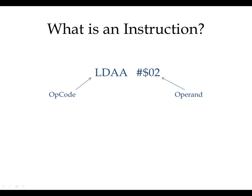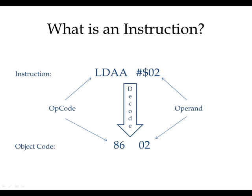Addressing modes include immediate, direct, extended, indexed, and some other modes as well. We don't yet know how to figure those out. But we know that any instruction, when we assemble it using the assembler, it translates the instruction to machine code. Machine code is directly understandable by the microprocessor. All those codes are written in binary, but for our own flexibility, we write machine code in hex instead of binary, because binary numbers are long and hex numbers are short. Remember that inside the machine, everything is binary.